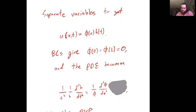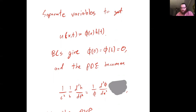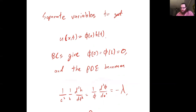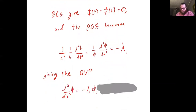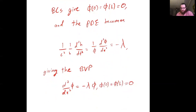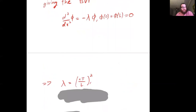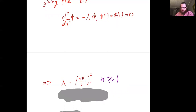With these boundary conditions, we'd expect sine terms to appear and lambda to equal (nπ/L)². To force that eigenvalue problem, since the left side is a function of t and the right side a function of x, we choose a separation constant giving the boundary value problem: d²φ/dx² = −λφ with those boundary conditions, which gives λ = (nπ/L)² with n ≥ 1.